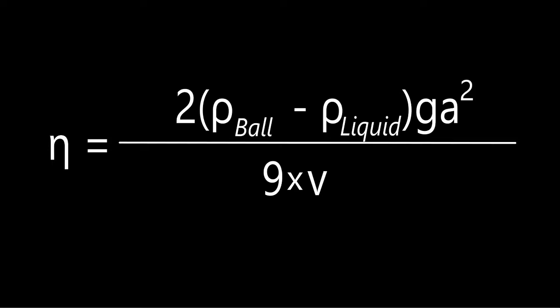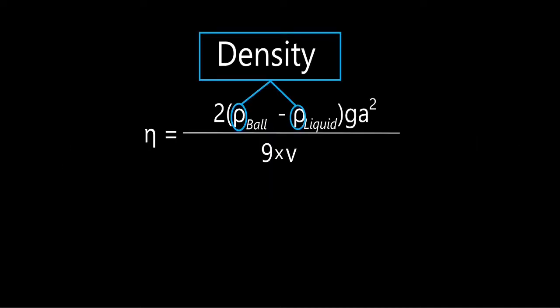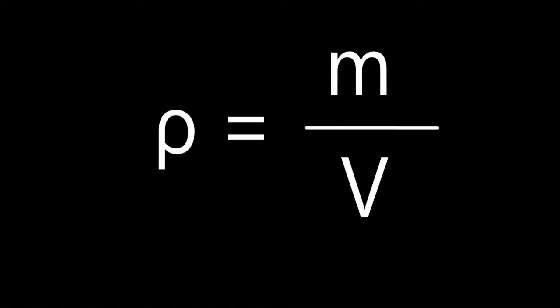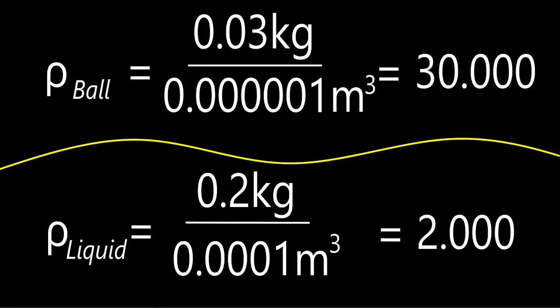And all this divided by 9 times the velocity. The rho describes the densities - the rho of the ball, obviously the density of the ball, and the rho of the liquid, obviously the density of the liquid. The density is calculated by dividing the mass of an object by its volume. Using that logic, we can calculate the density of both the ball and the liquid.